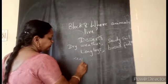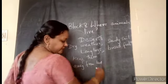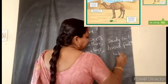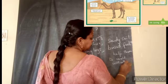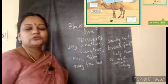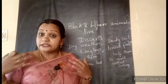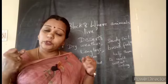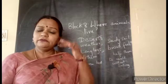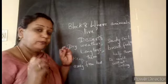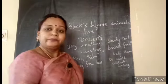Long legs keep camels away from the hot land surface, and broad feet help them walk without sinking in the sand. Additionally, camels have thick skin to bear the hot weather. In winter, deserts get cold, and the thick skin helps them manage extreme climates too. The important physical features helping the camel are: long legs, broad feet, and thick skin.